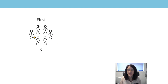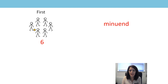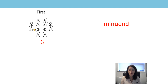Let me tell you a math story. First, there were six children playing — looks like they're playing football. Then five children went home. We're going to use the mathematical vocabulary of the minuend today. The minuend tells us the quantity there is before anything is subtracted. So six is the minuend because there are six children playing football before any go away.